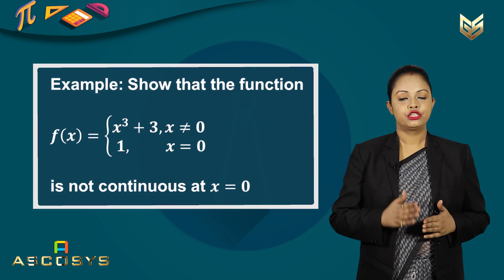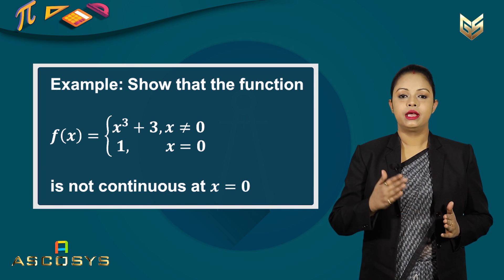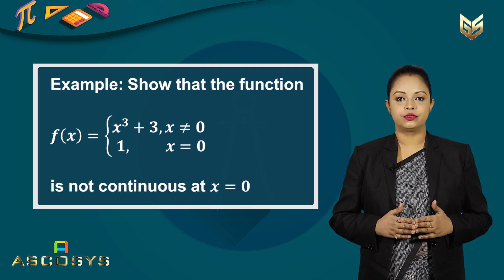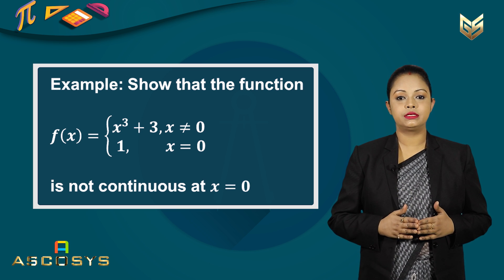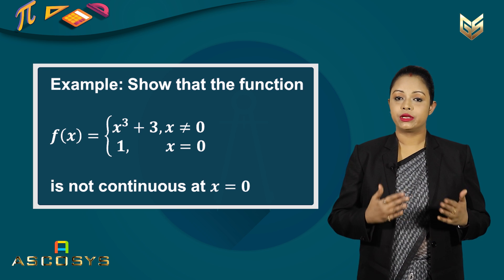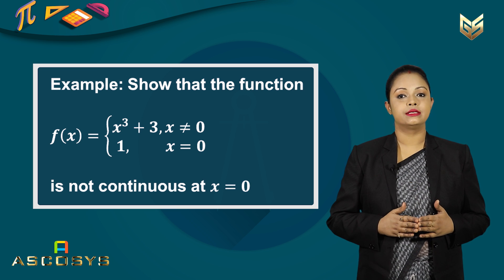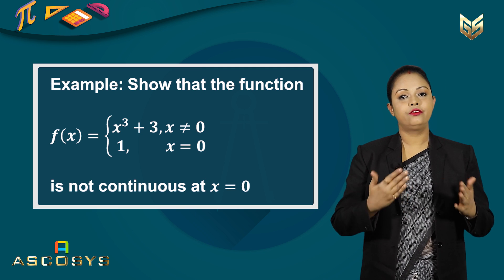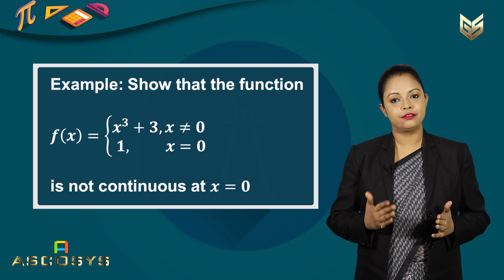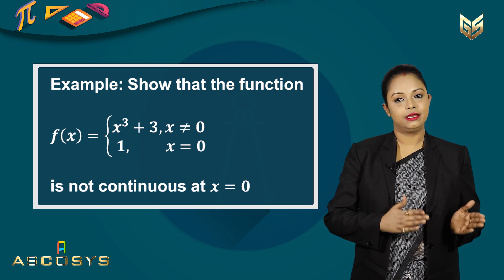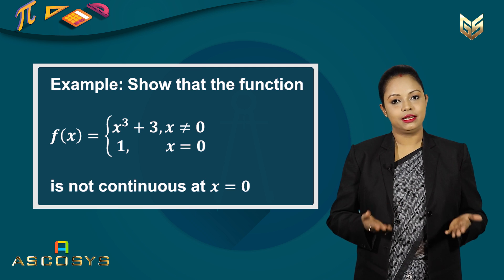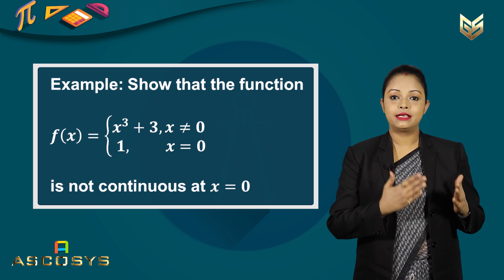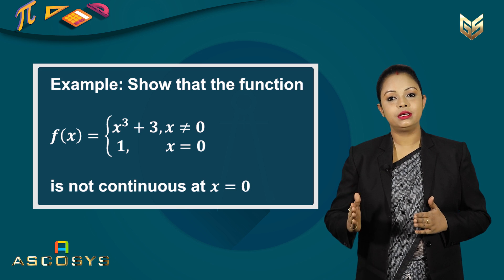Let us study another example. Show that the function f(x) equal to x³ plus 3 when x is not equal to 0, and f(x) equal to 1 when x is equal to 0, is not continuous at x equal to 0. Our function is defined in two ways. Whenever a function is defined in this manner, we have to find the left-hand limit and the right-hand limit. If they are equal, the limit exists; if they are not equal, the limit does not exist. And if the limit exists, that value of the limit must equal the value of the function for the function to be continuous.